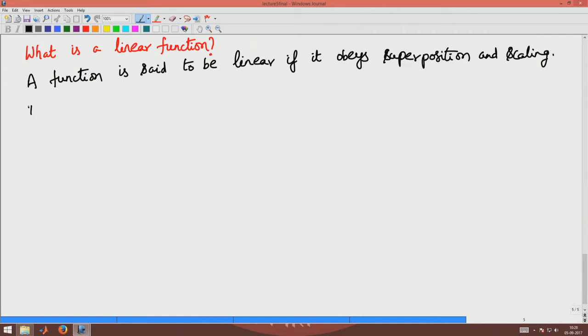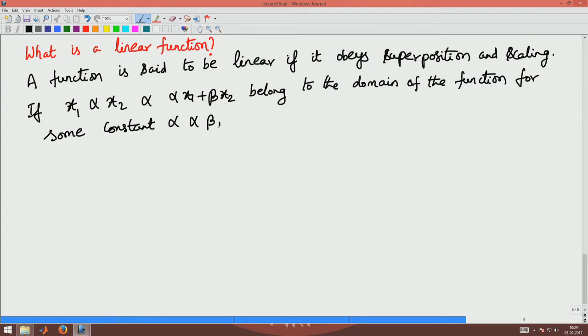What does this mean? If x₁ and αx₁ and x₂ and αx₁ + βx₂ belong to the domain of the function, and we have a linear function for some constant α and β, then f(αx₁ + βx₂) must be equal to α·f(x₁) + β·f(x₂). If the function obeys this rule then it is said to be linear.